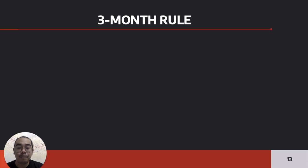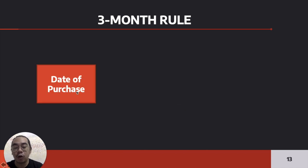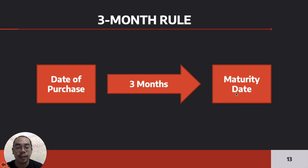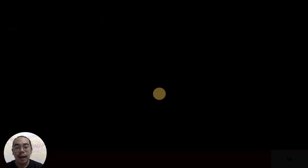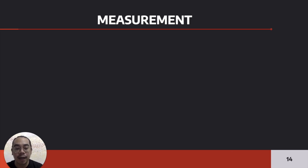To know if an investment qualifies as a cash equivalent, we have the three-month rule. The date of purchase, or when you purchase the instrument, must be three months from the maturity date. You just check when it was bought and when the instrument matures. If the gap between those two dates is three months, then it qualifies as a cash equivalent. Like cash, cash equivalents are also measured at face value or face amount.